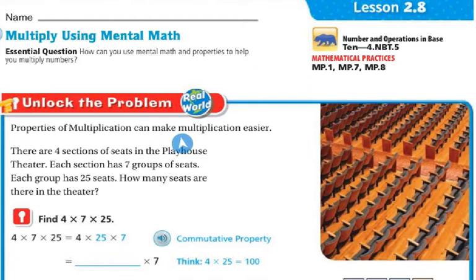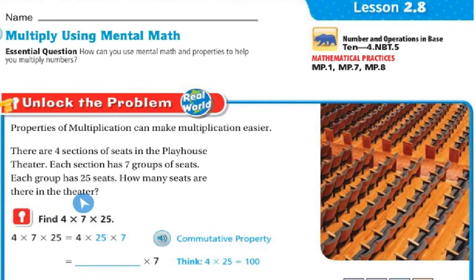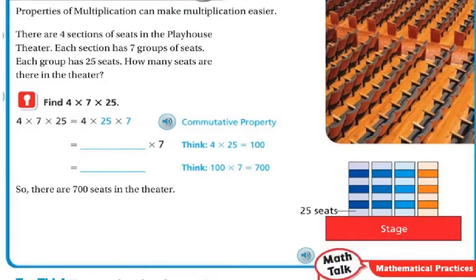Properties of multiplication can make multiplication easier. There are four sections of seats in the playhouse theater. Each section has seven groups of seats, and each group has 25 seats. How many seats are there in the theater? I know there are four sections of seats, each section has seven groups, and each group has 25 seats.